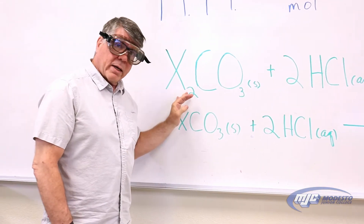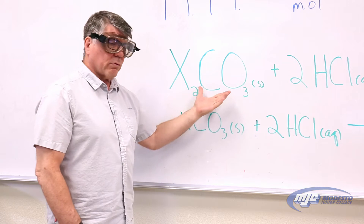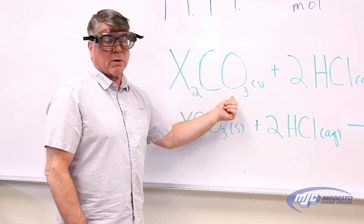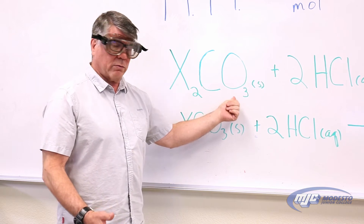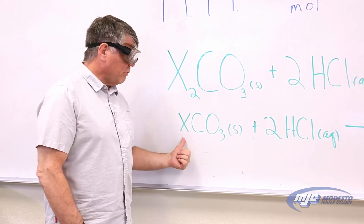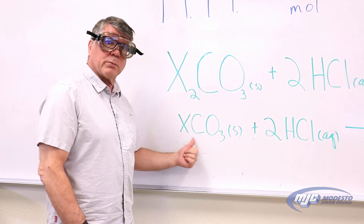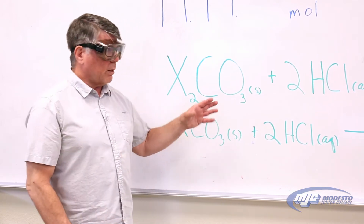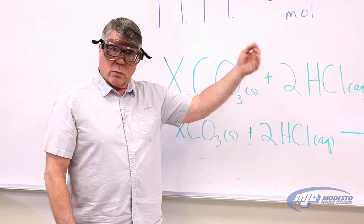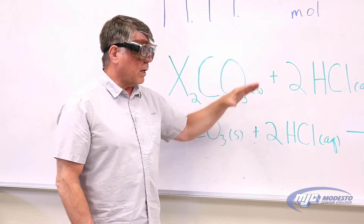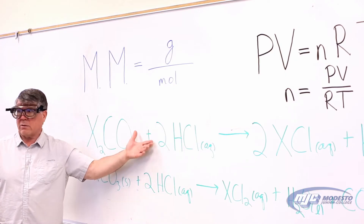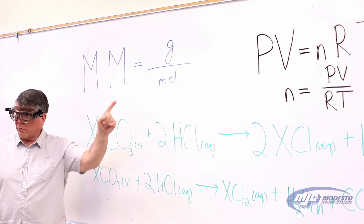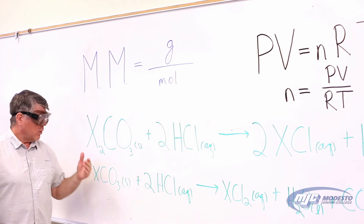If the cation in the carbonate has a plus-one charge, the formula is going to look like this — two of the cations with one carbonate, because carbonate has a negative-two charge. However, if the cation has a plus-two charge, it will be one-to-one. But it doesn't really matter, because in the balanced equation for the reaction of either of these carbonates with hydrochloric acid, we always produce a one-to-one mole ratio of carbon dioxide gas to our unknown.